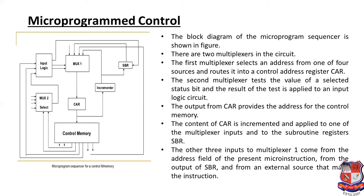In the sequencer circuit, there are two multiplexers. The first multiplexer selects an address from one of four sources and routes it into the control address register. The second multiplexer tests the value of a selected status bit, and the result of the test is applied to an input logic circuit. The second multiplexer uses the status bit from control memory and provides an output to the input logic circuit.